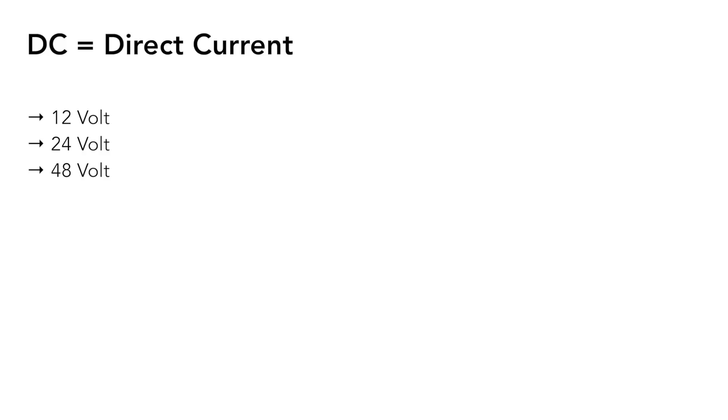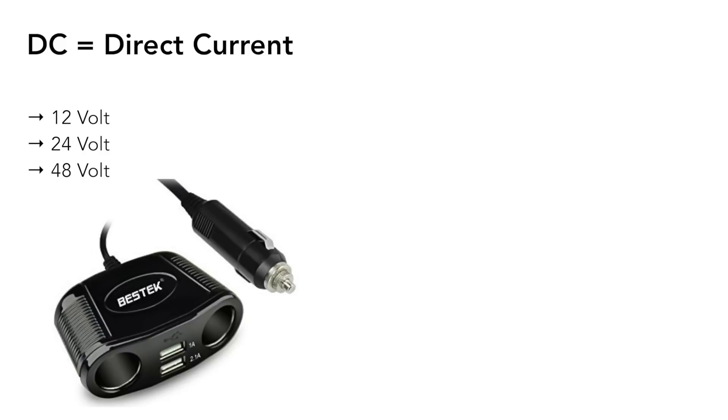DC can be found in different configurations as well, but it's mainly used to power low-voltage appliances such as DC fans, DC lights, DC pumps, and other things like this. You can also buy DC-powered appliances that have that little cigarette outlet on the end so you can plug them into your car, or plug them into your RV that has a dedicated DC system.